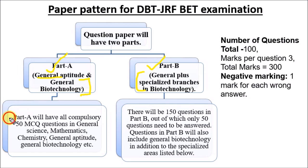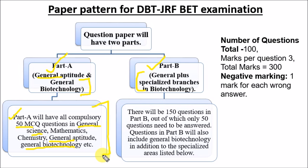Part A has 50 MCQs comprising general science — physics, chemistry, mathematics, general aptitude, and general biotechnology. To solve Part A you need to know basic science including physics, chemistry, biology, and mathematics, as well as general biotechnology sections like biochemistry, cellular biology, immunology, microbiology, and RDT.